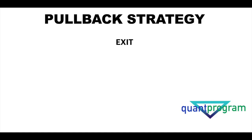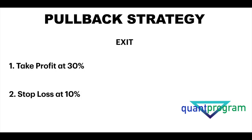Our exit condition is straightforward: a simple stop loss and take profit. We have a take profit at 30% and a stop loss at 10%, giving us a 3-to-1 risk/reward ratio and enough space for the stock to move. If I set the stop loss to 1%, 2%, or 3%, that doesn't give room for minor corrections. At 10%, even minor downside corrections are manageable. The 30% profit target gives a solid risk/reward. You can adjust these values — just keep the ratio proportional.